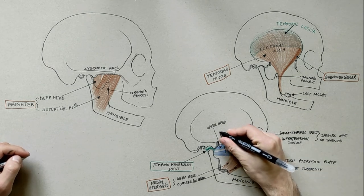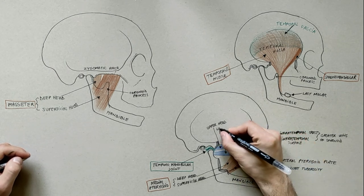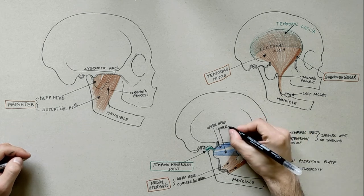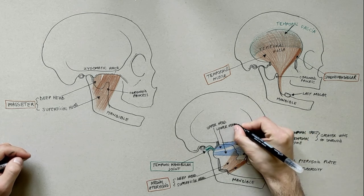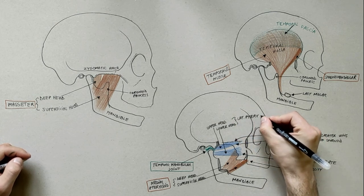The lower head arises from the lateral surface of the lateral pterygoid plate of the sphenoid bone and inserts onto the pterygoid fovea, which is a concave surface on the medial side of the neck of the condyloid process of the mandible.